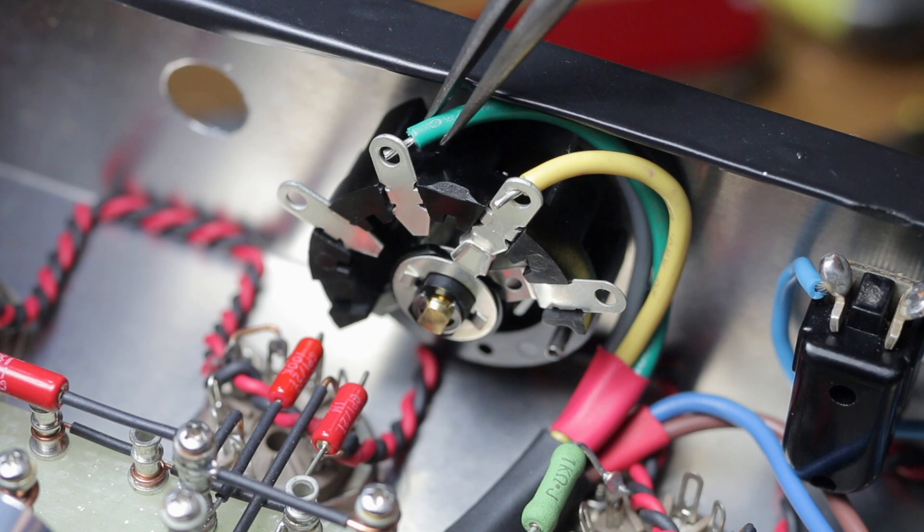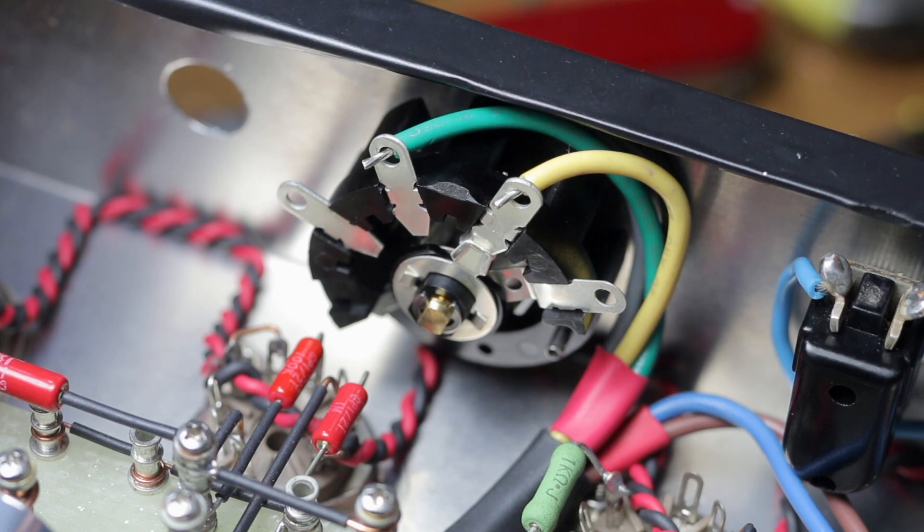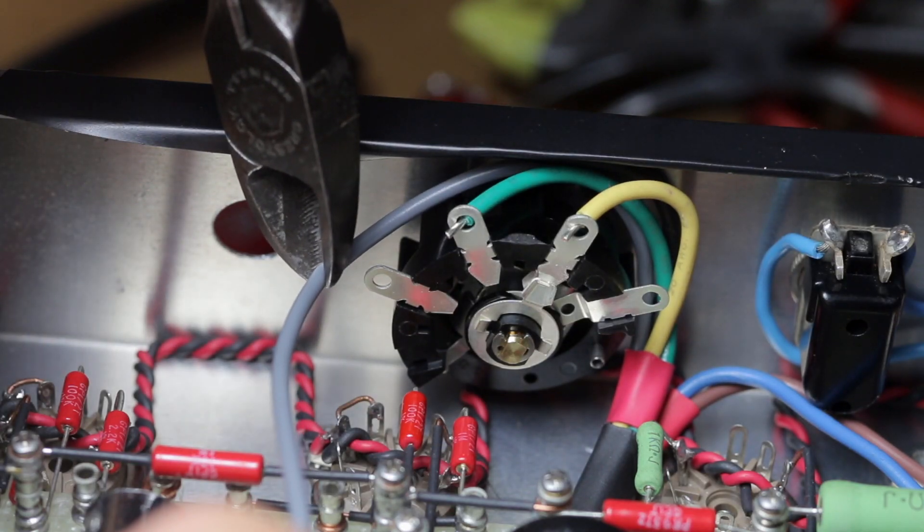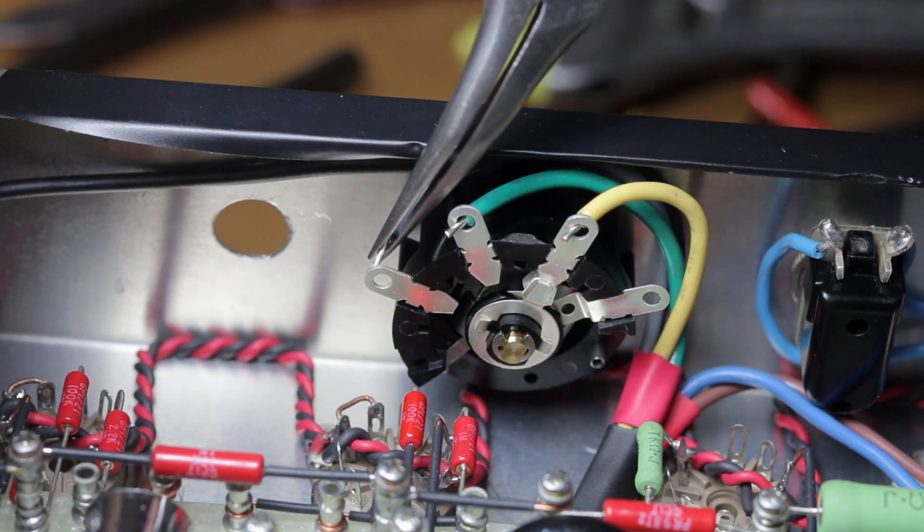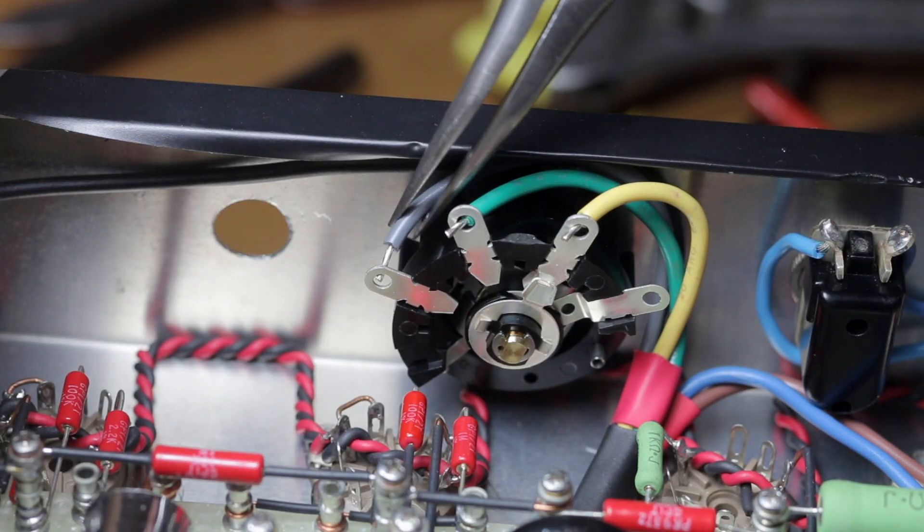To avoid any unnecessary loops, I run all of the output transformer secondary cables around the back of the switch, and this includes the cable that connects to earth.